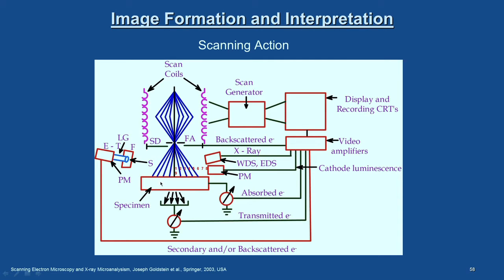Each line shown in the schematic is scanning the specimen at a particular point. The numbers from 1 to 10 illustrate the scanning action of the electron beam from left to right in one direction. Similarly, scanning is also possible in the y-direction. This way you collect the signal, interpret it, and form images.